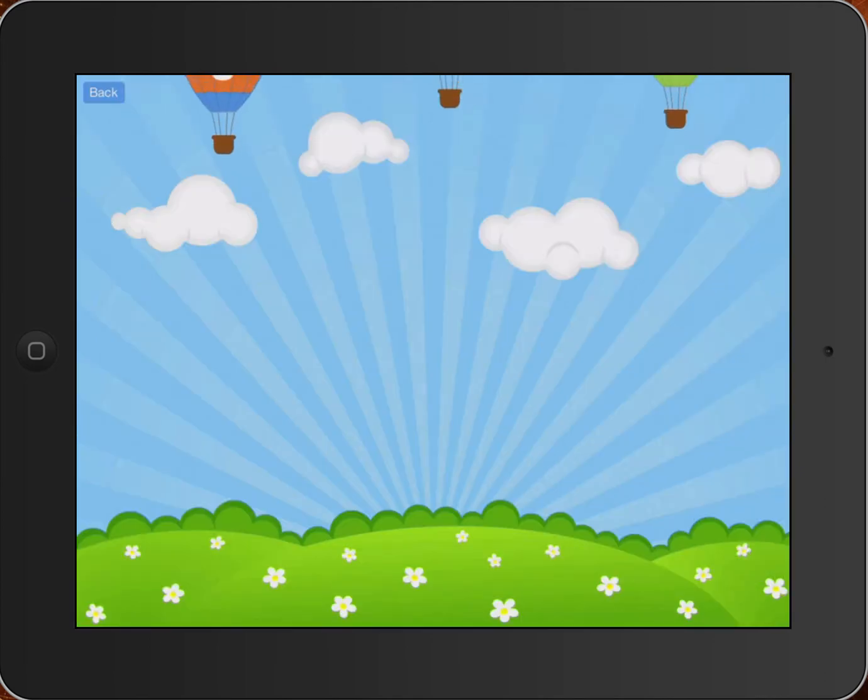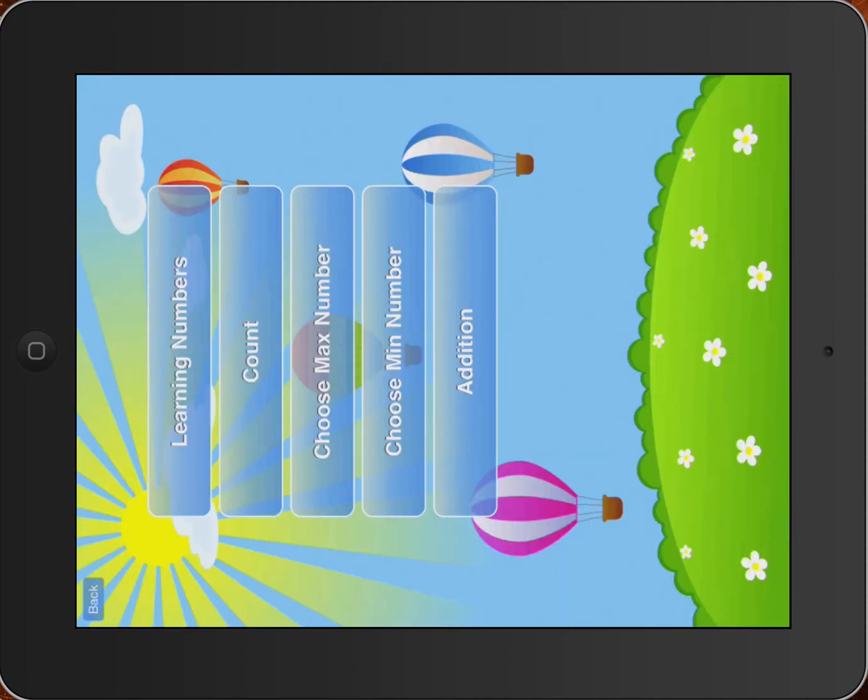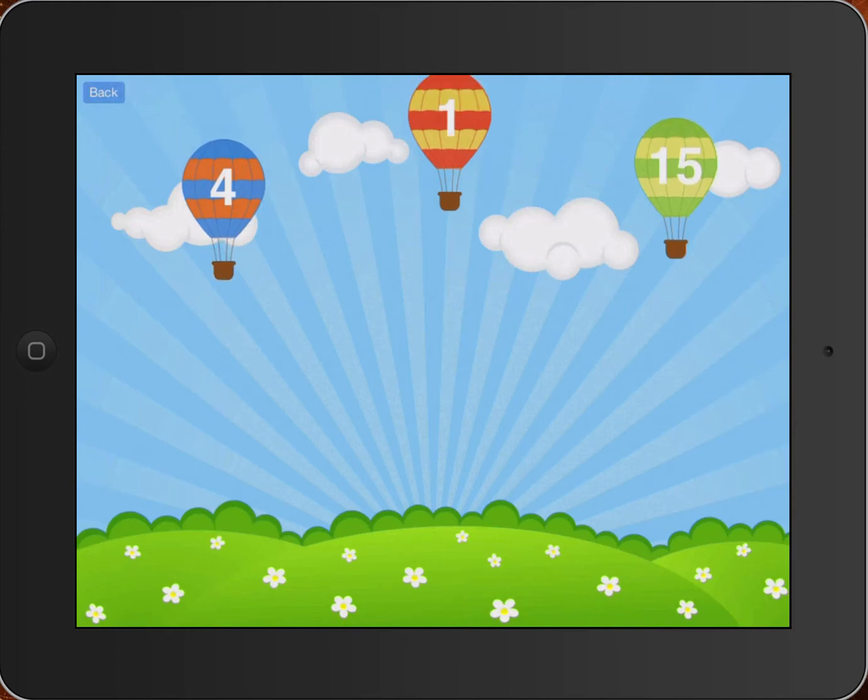It also has a feature to choose the maximum number. Again, very handy. So there it is. And notice it's very simple to use. So this is something your kids can pick up and just go for. And let's look at the minimum number real quick. Same balloons, very simple to use.